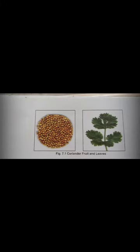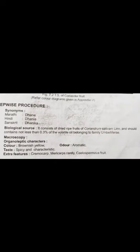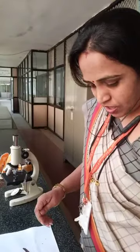The aim of today's practical is to study morphological and microscopical characteristics of coriander fruit. Today we are going to have a demonstration on how to take a transverse section of coriander fruits. Coriander fruit is called Dhani in Marathi, Dhania in Hindi, and Dhanika in Sanskrit.